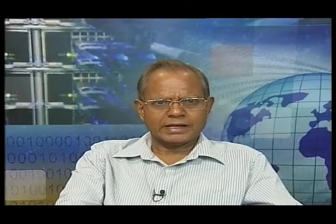For blotting paper in rabdi (a sweet meat), take a teaspoonful of rabdi in a test tube, add 3 ml of hydrochloric acid and 3 ml of distilled water, stir with a glass rod, then remove the rod and examine. Presence of fine fibrous material on the glass rod indicates presence of blotting paper in rabdi.